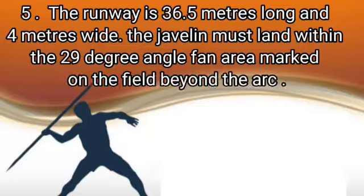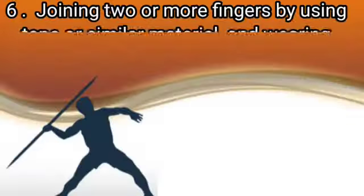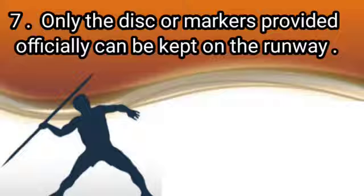The runway is 36.5 meters long and 4 meters wide. The javelin must land within the 29-degree angle fan area marked on the field beyond the arc. Joining two or more fingers using tape or similar material and wearing gloves is prohibited. Only the disc or markers provided officially can be kept on the runway.